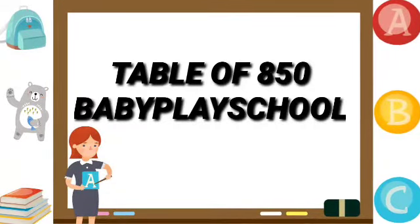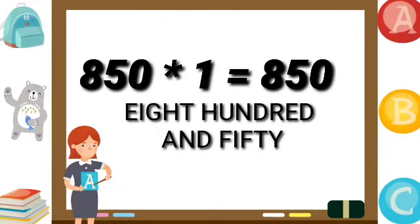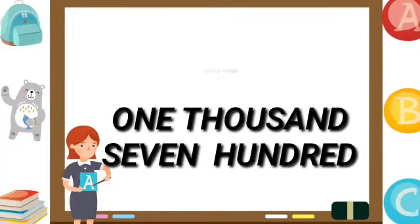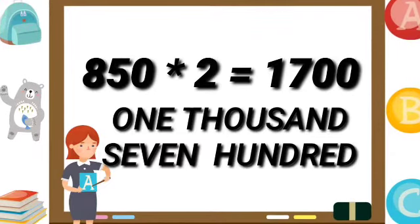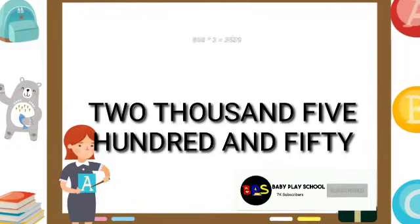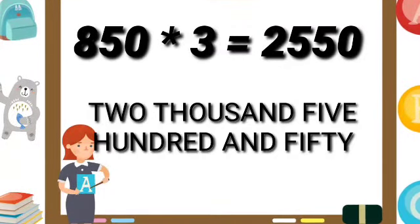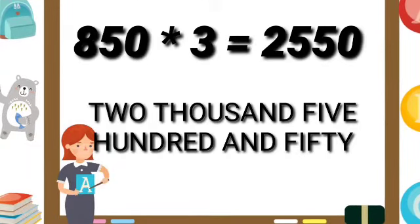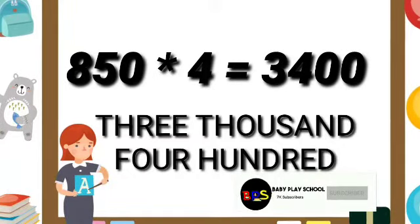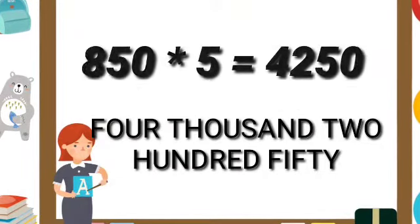Let's start the table and multiplication of 850. 850 ones are 850. 850 twos are 1700. 850 threes are 2550. 850 fours are 3400.